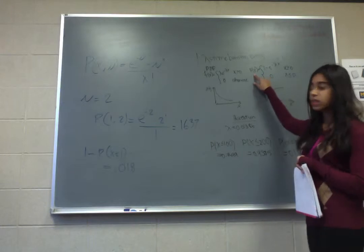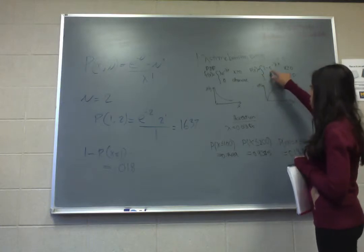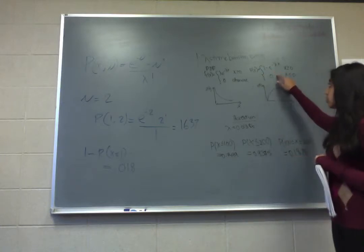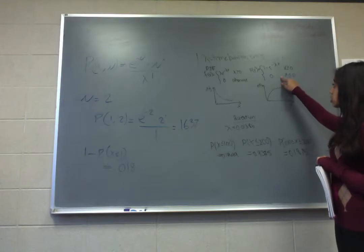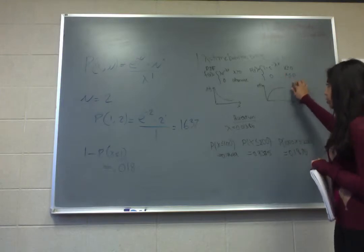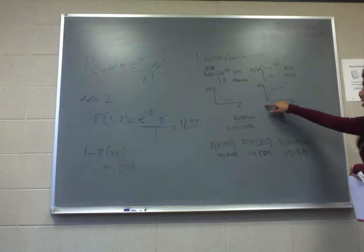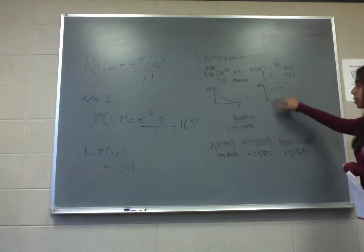Capital F of x, which is the CDF, has the formula 1 minus e raised to minus lambda x when x is greater than or equal to 0, and 0 otherwise. So it's an increasing function, but the slope continuously decreases.